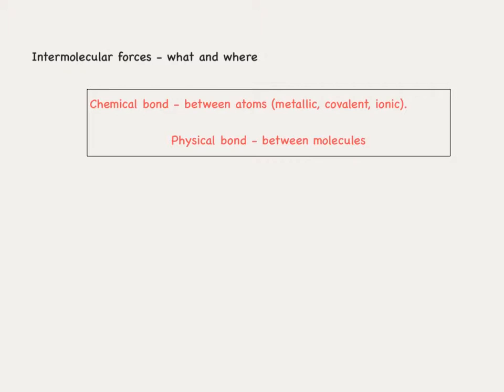Intermolecular forces — what are they and where do they occur? Well, let's look at the two types of bonds. We have chemical bonds, which occur between atoms — examples include metallic, covalent, and ionic. Importantly, intermolecular forces are a type of physical bond and they occur between molecules, meaning they tend to be between covalent molecules.